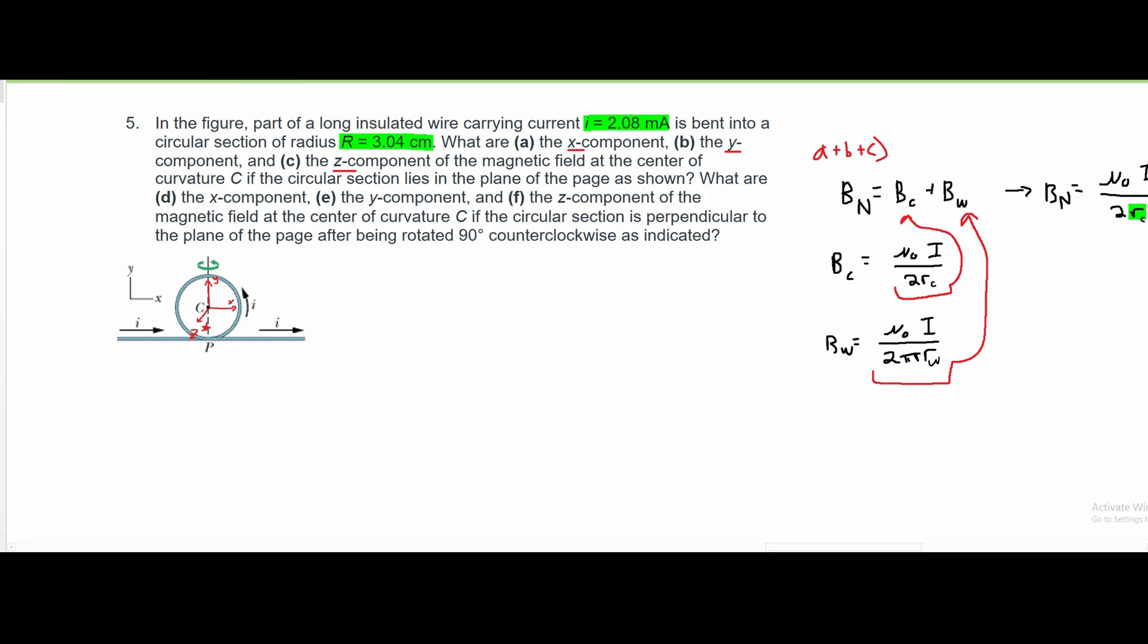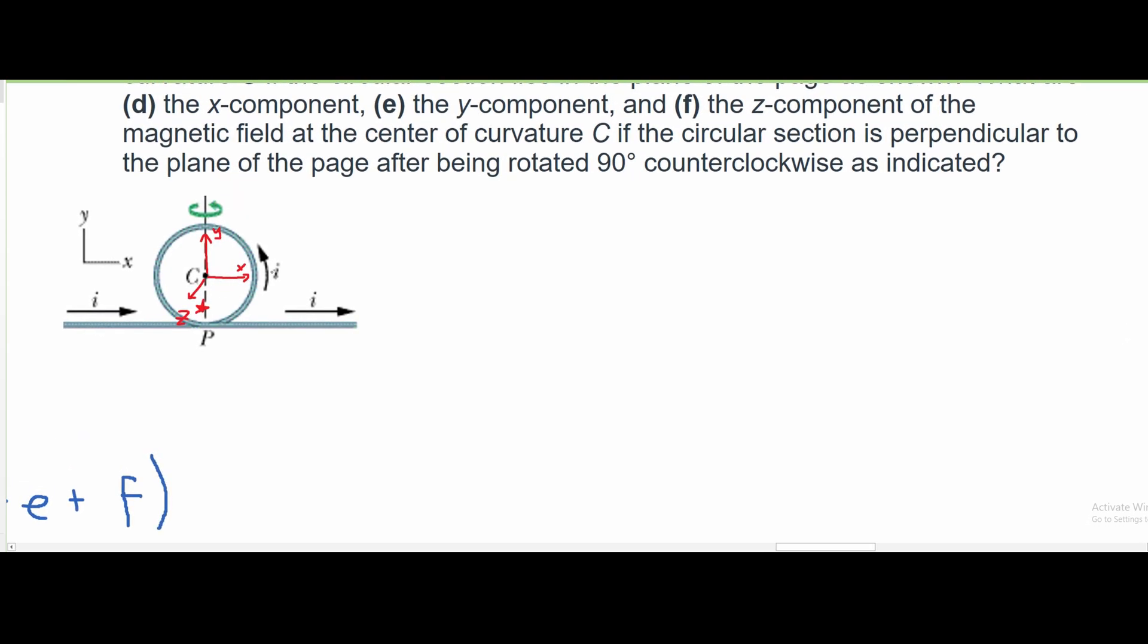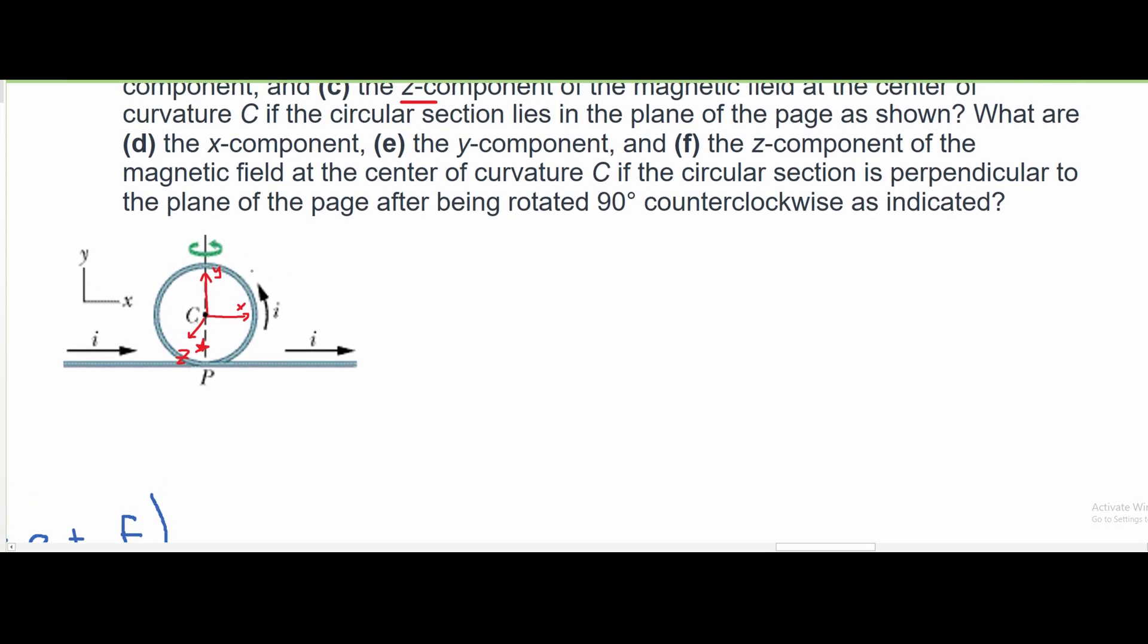Now we are looking at our d, e, and f. And that is asking us for the x, y, and z component of the magnetic field at the center of curvature C if the circular section is perpendicular to the plane of the page after being rotated 90 degrees clockwise as indicated. This means that if we look at our circle and it's going to be rotated 90 degrees clockwise, we have this arrow to look at.